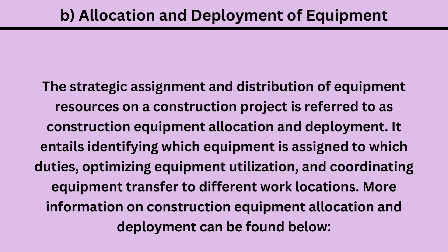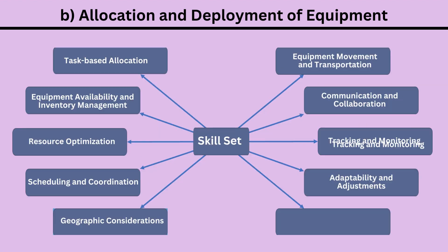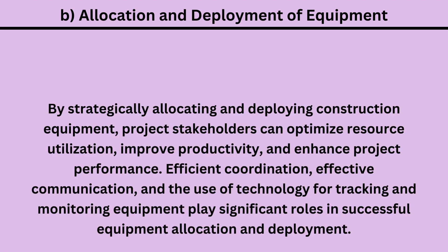More information on construction equipment allocation and deployment can be found below: 1. Task-based Allocation, 2. Equipment Availability and Inventory Management, 3. Resource Optimization, 4. Scheduling and Coordination, 5. Geographic Considerations, 6. Equipment Movement and Transportation, 7. Communication and Collaboration, 8. Tracking and Monitoring, 9. Adaptability and Adjustments. By strategically allocating and deploying construction equipment, project stakeholders can optimize resource utilization, improve productivity, and enhance project performance. Efficient coordination, effective communication, and the use of technology for tracking and monitoring equipment play significant roles in successful equipment allocation and deployment.